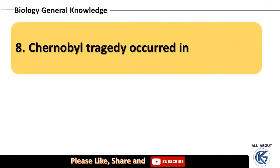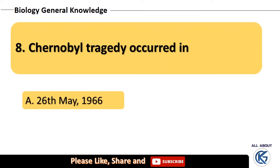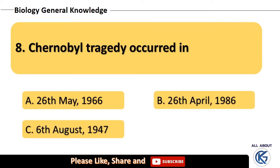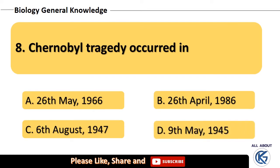The Chernobyl tragedy occurred on — 26th May 1966, 26th April 1986, 6th August 1947, or 9th May 1945?